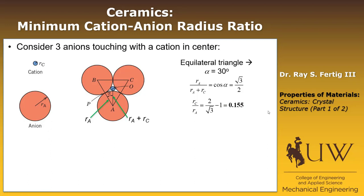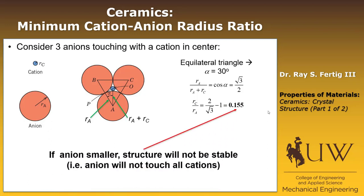Why is 0.155 important? Because if the cation is any smaller than this ratio, it won't touch all three of the anions, making the structure unstable, and a different structure must be adopted. We can go through a variety of different classes of structures and find out what the minimum cation-to-anion radius ratio is for each.